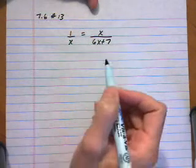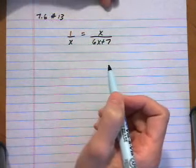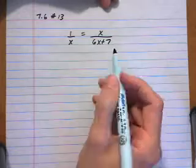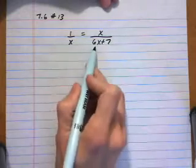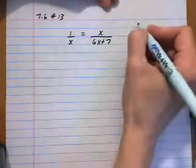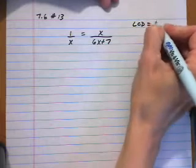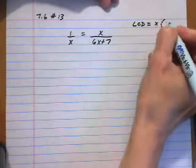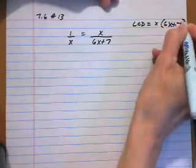Solve the rational equation. The first thing we need to do is find the LCD. The LCD for these two denominators would be x times 6x plus 7.